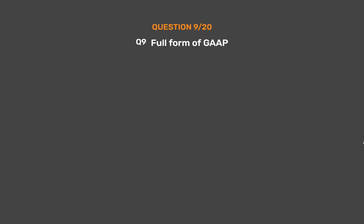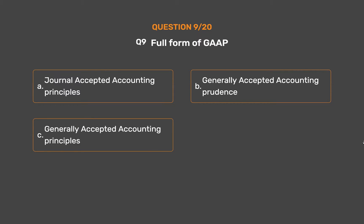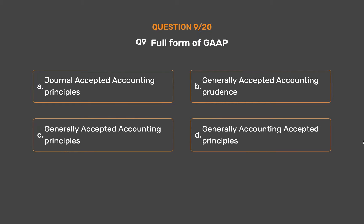Question No. 9: Full form of GAAP? Option A: Journal Accepted Accounting Principles. Option B: Generally Accepted Accounting Prudence. Option C: Generally Accepted Accounting Principles. Option D: Generally Accounting Accepted Principles.